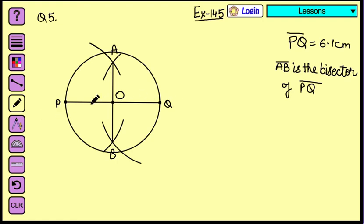Now PQ is the diameter. O is the center. So you can write it down on the side also.